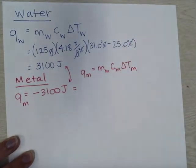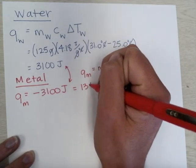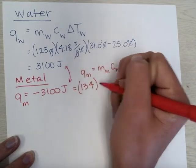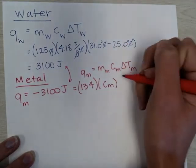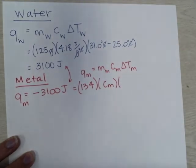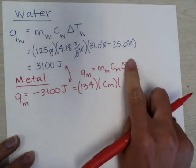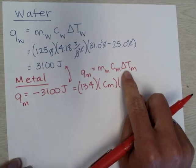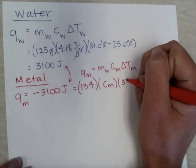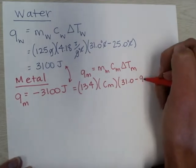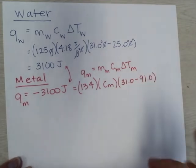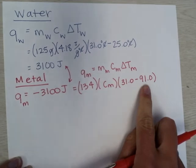And so I know the Q, I know the mass of the metal is 134 grams. I don't know the specific heat of the metal, that's what I'm solving for. But the change in temperature of the metal, remember that the change in temperature is the same, they come to thermal equilibrium, and so that's also 31 degrees, but that metal was hot and it started at 91 degrees. So I'm going to subtract these.